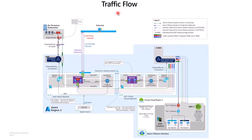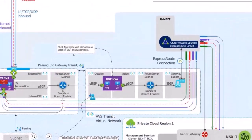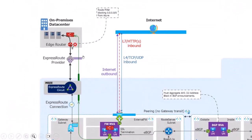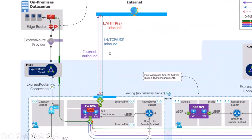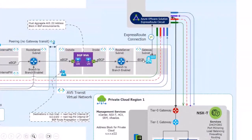Let's discuss traffic flow. In traditional AVS deployments — and actually in the majority of our deployments — for ExpressRoute we will always have a Global Reach connection going back to on-premise. That does not exist with this deployment. In this deployment, our ExpressRoute connection will terminate to a gateway subnet inside of the AVS transit virtual network.